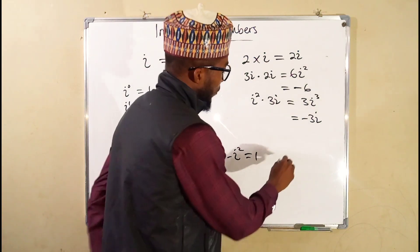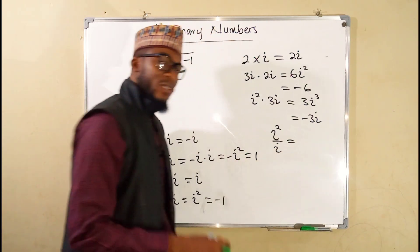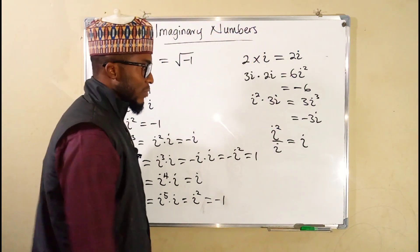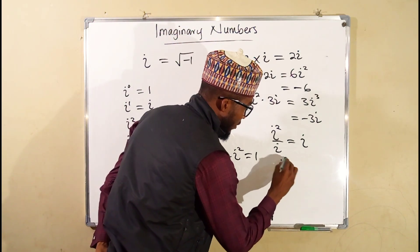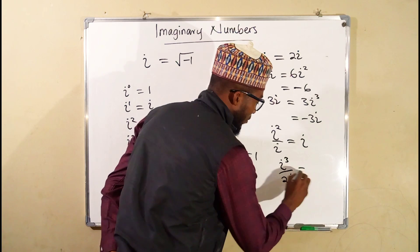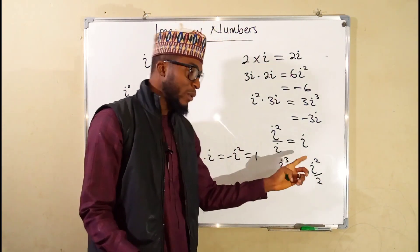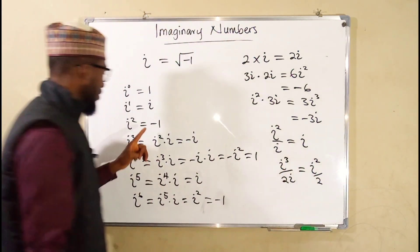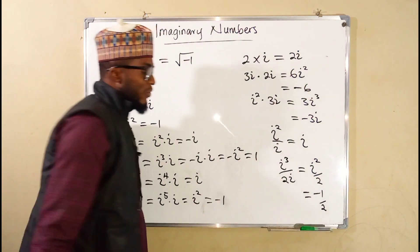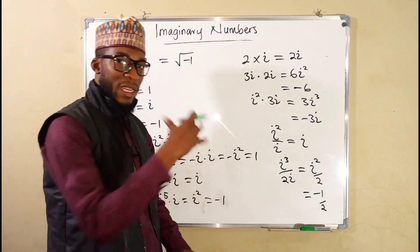What about division? If we have i squared divided by i, using the laws of indices the exponent reduces by 1, giving i. If we have i to the third power divided by 2i, one i cancels with one i, leaving i squared over 2. Since i squared is negative 1, we finally have negative 1 over 2.